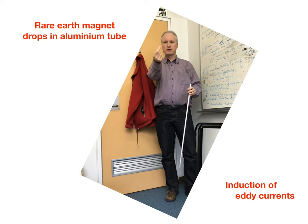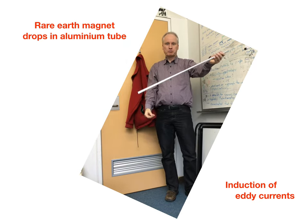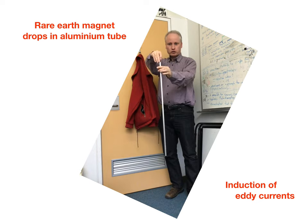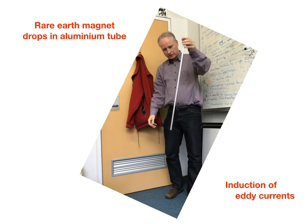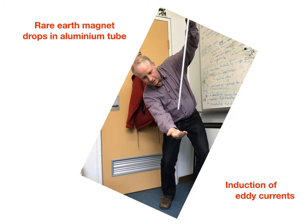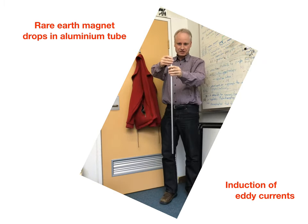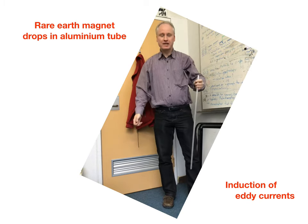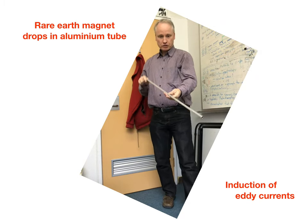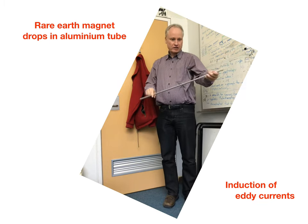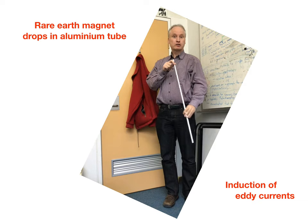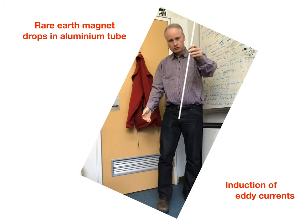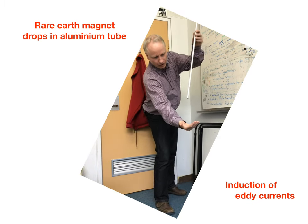Here is a rare earth magnet and an aluminum tube. If I drop the magnet, it just falls under gravity. If I drop it into the aluminum tube, it takes much longer — about five seconds for it to come out. That's because in the aluminum, currents are created such that the induced magnetic field associated with them opposes the motion of the rare earth magnet.